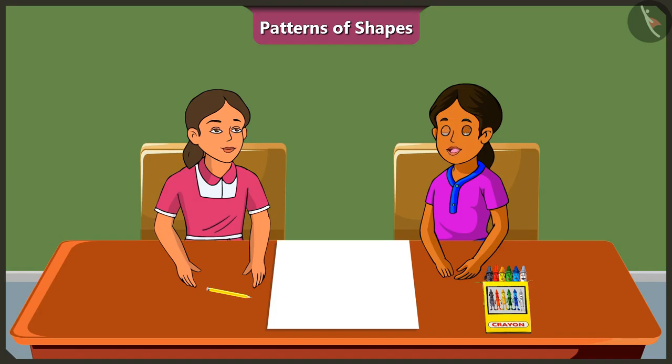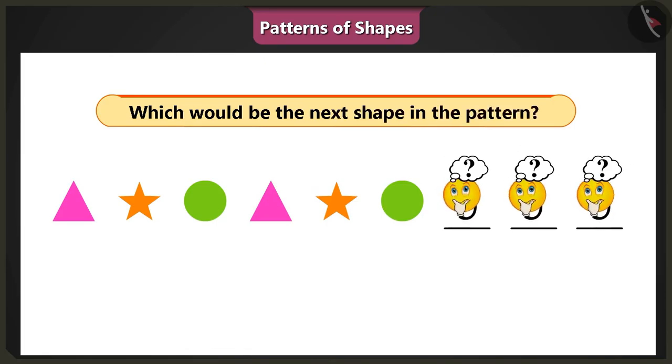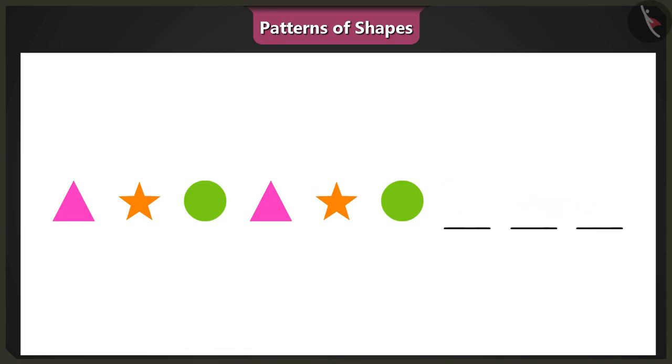Alright, ask me. In this pattern, which do you think would be the next shape? Oh, that's easy. The next shape in this pattern will be a green colored circle.